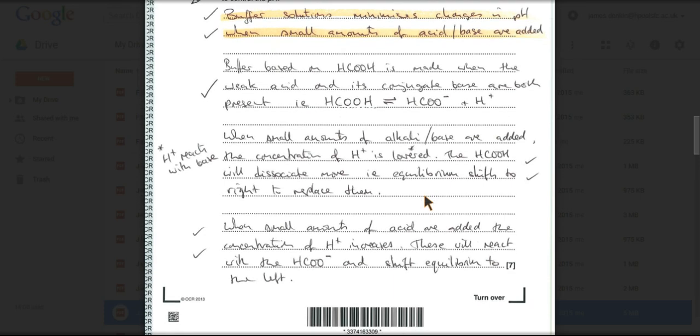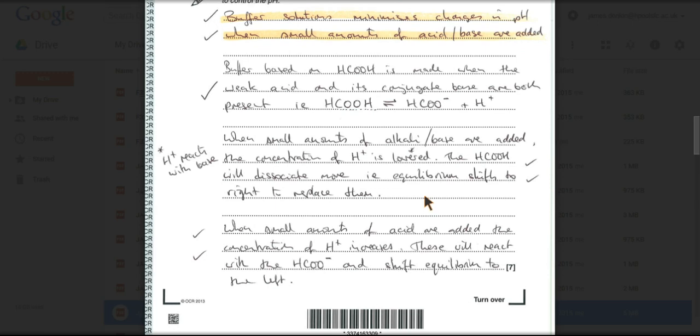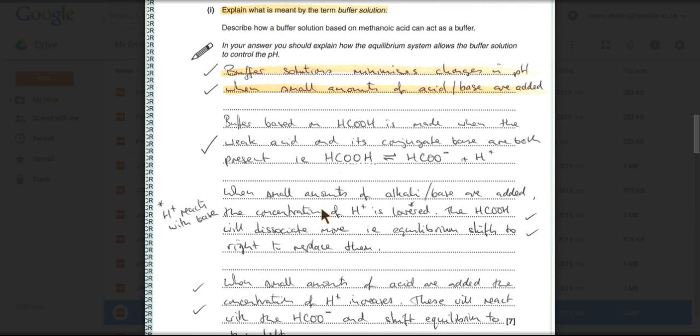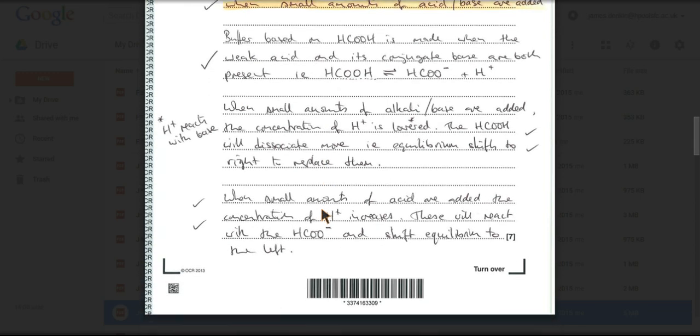And the opposite of that, when small amounts of acid are added, that's going to increase the H plus concentration. So that means that this stock of methanoate ions can react with those and send the equilibrium over to the left and restore the pH. Small amounts of acid are added. The concentration of H plus increases. They react with the HCOO minus ion and shift the equilibrium to the left.